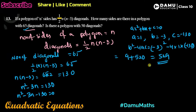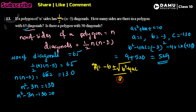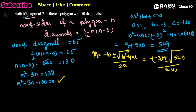The discriminant is 529. Using the quadratic formula, n = [−b ± √(b² − 4ac)] / 2a = [−(−3) ± √529] / 2. Since √529 = 23, this gives n = (3 ± 23) / 2.